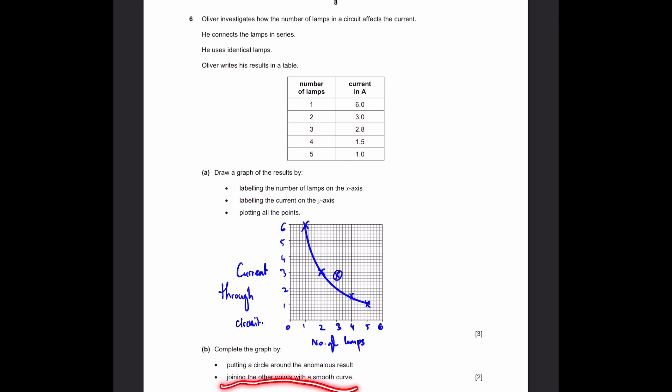And now for part B, we need to complete the graph by putting a circle around the anomalous result, which is this one, because it doesn't fit the curve. It's outside. And the second one is joining the other points with smooth curve. You can see I've done it here. Remember, you have to label it like this. It's best to label it like this, although yes, you can use another scale if you want to, but this is the best way to do it.